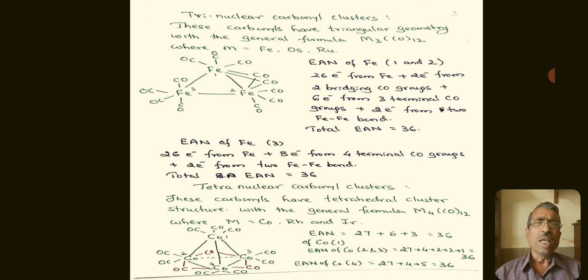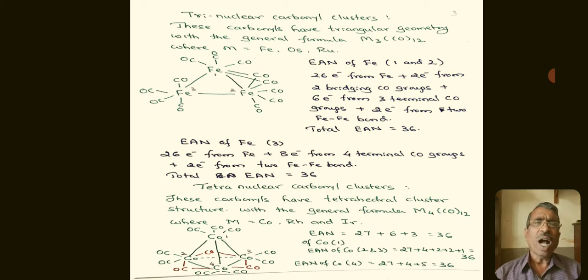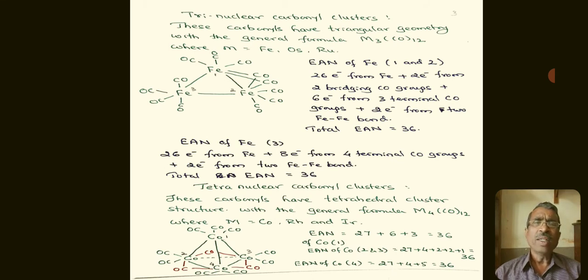Coming to the trinuclear carbonyl clusters: these carbonyl clusters have triangular geometry with the general formula M3(CO)12, where M may be iron, osmium, or ruthenium. Taking iron as an example, it is called tri-iron dodecacarbonyl. Among the three iron atoms, the first and second iron atoms are similar to each other, and the third one is different.